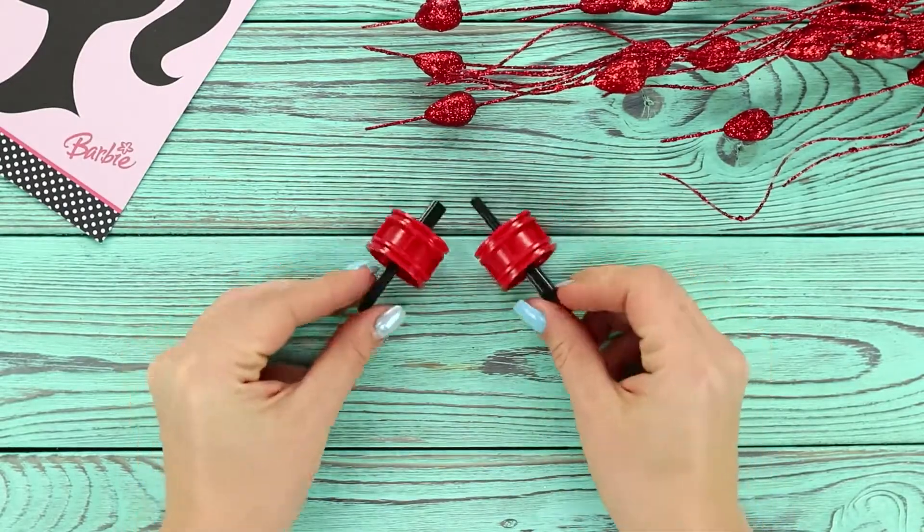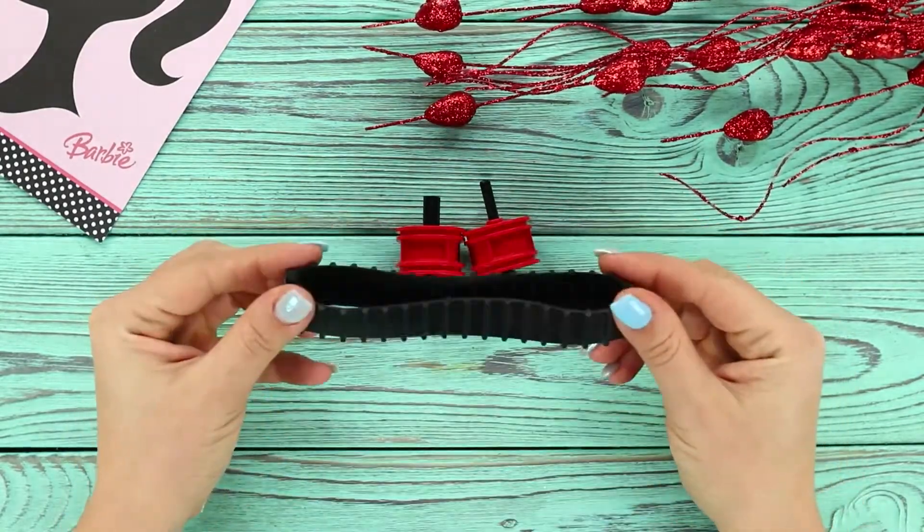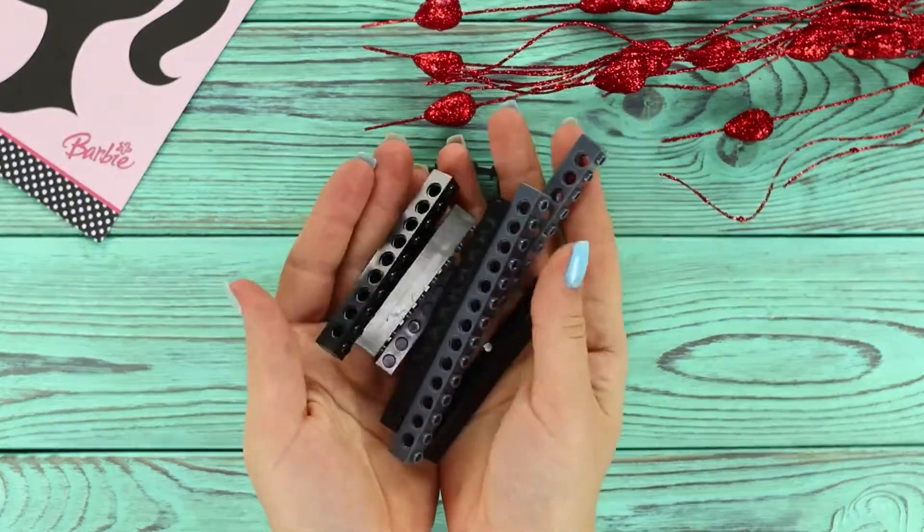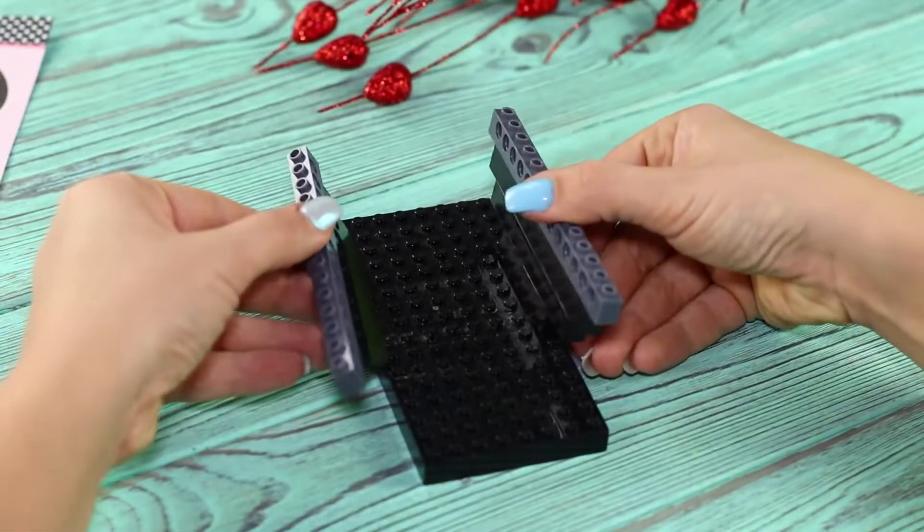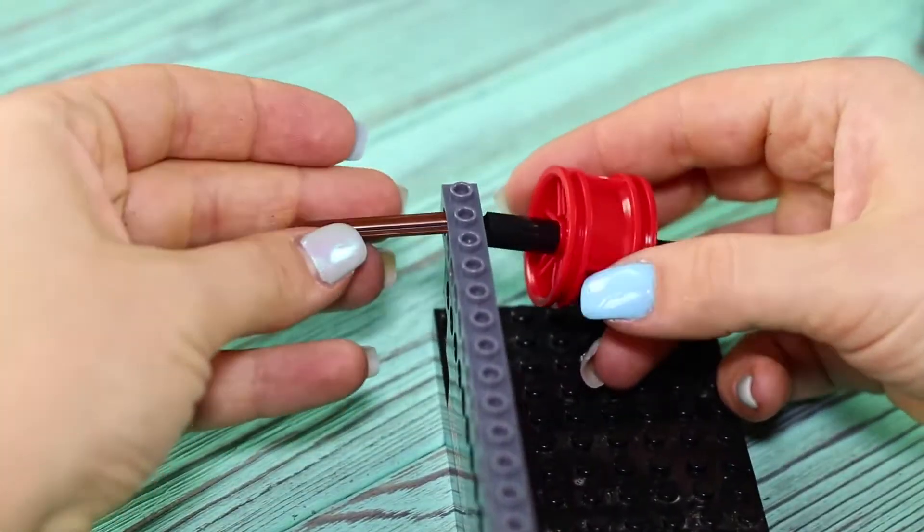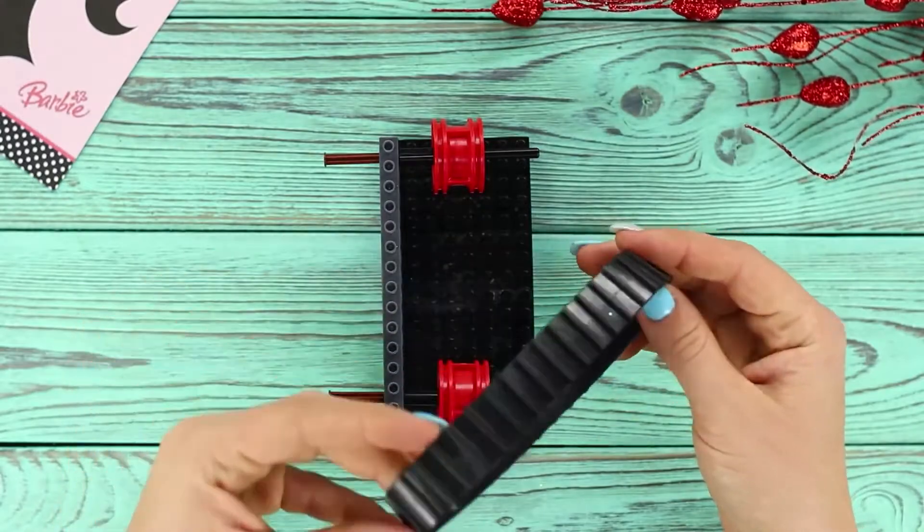For the next idea, you will need wheels from a toy car and a tread from a toy tank. Also, get some Legos. Connect the blocks and fasten them to a flat base. Attach the wheels. Stretch the tank tread on the wheels.